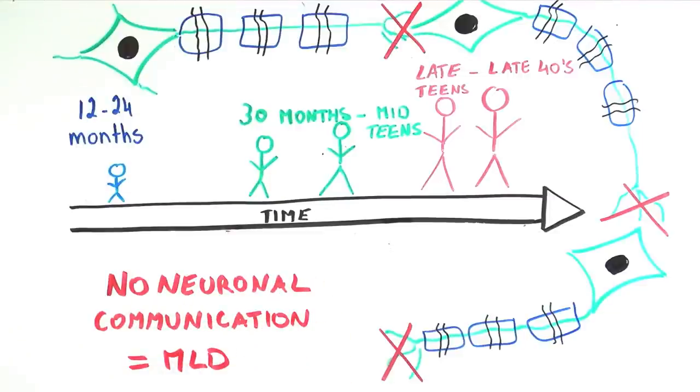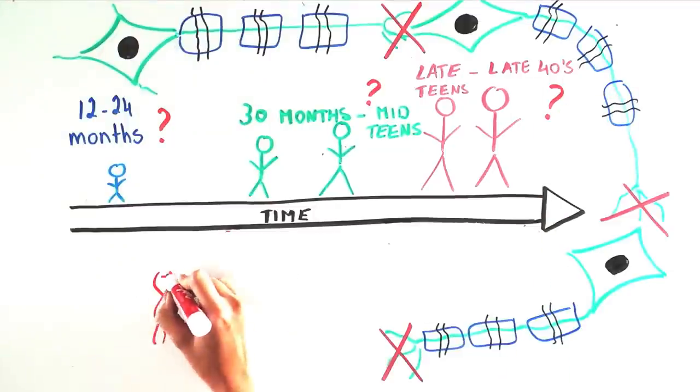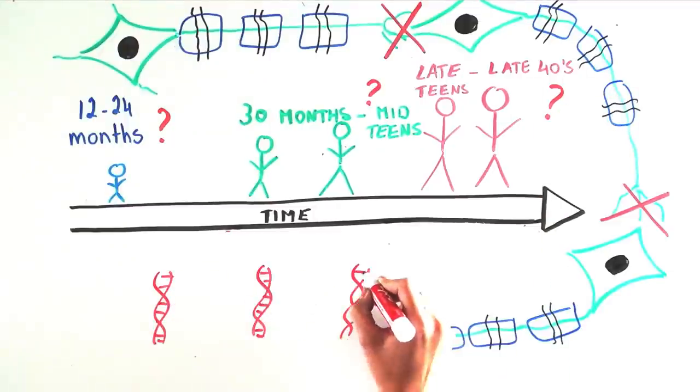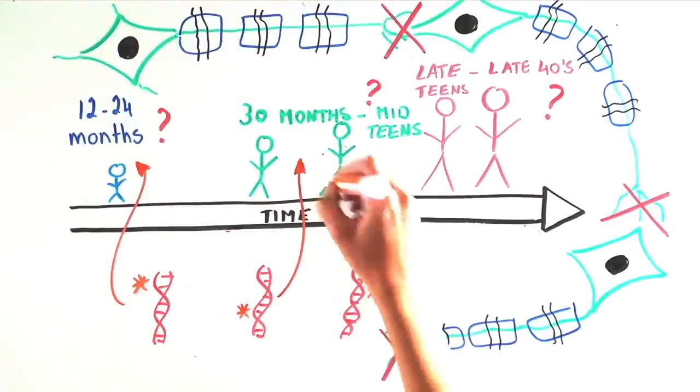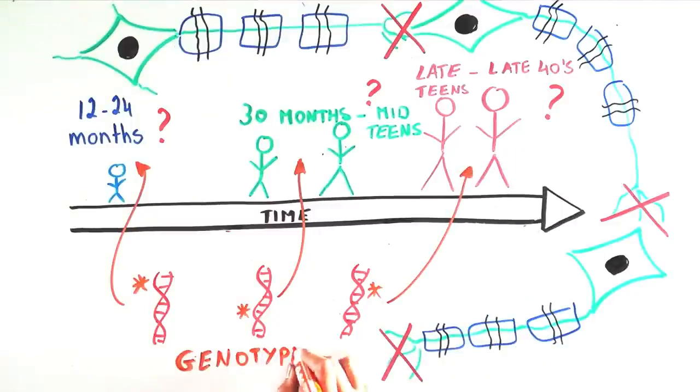Despite this same underlying biology, we don't know why someone would develop one clinical subtype of MLD versus another. We want to understand the relationship between the type of mutation, or genotype, to the symptom, or phenotype.